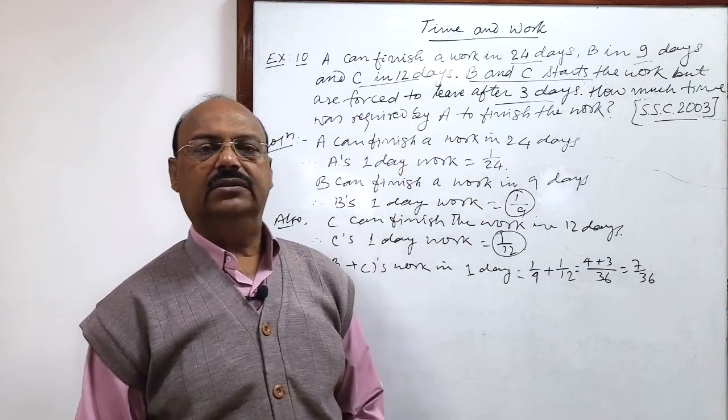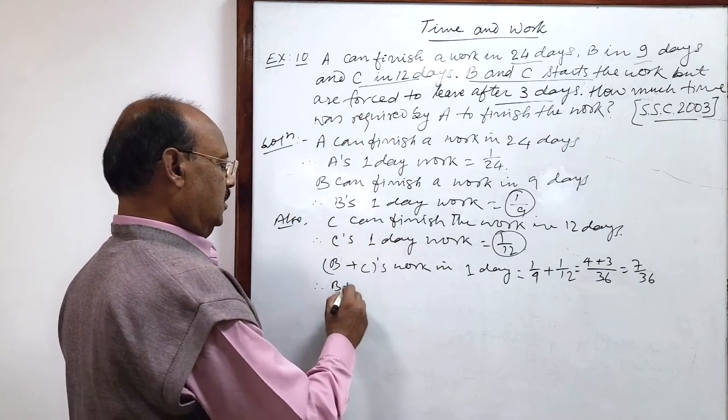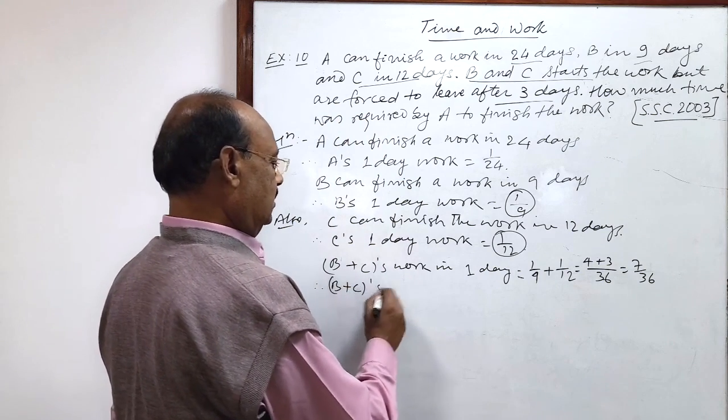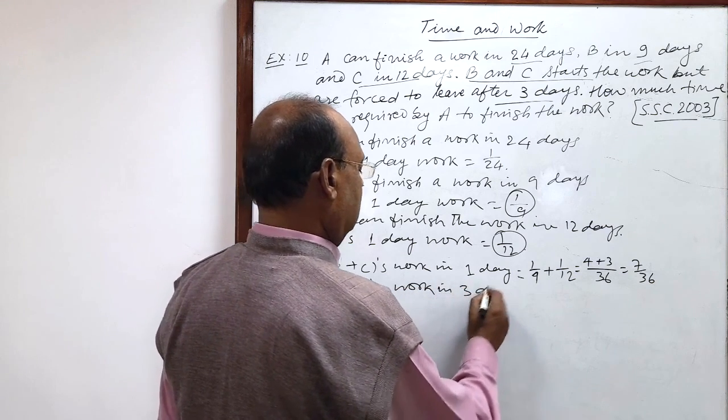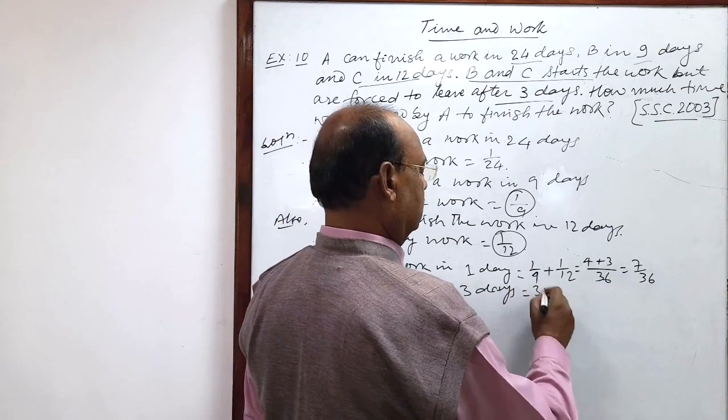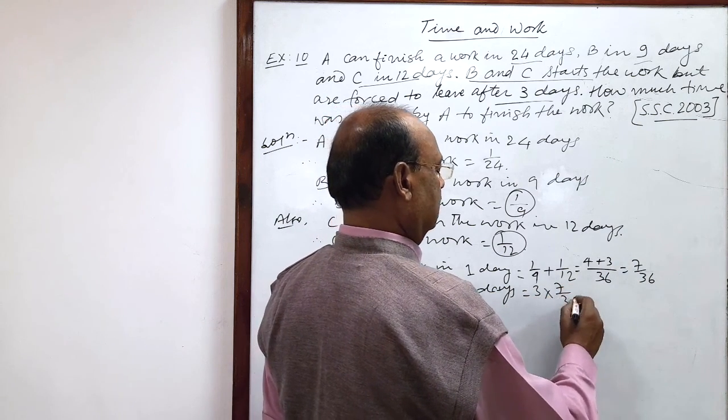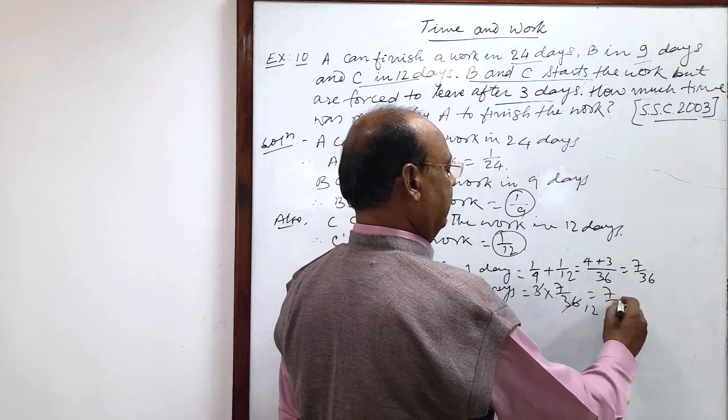And how long they have worked? For 3 days. So, therefore, B plus C's work in 3 days is 3 times of this much: 3 into 7 by 36. This will be cancelled. 7 by 12.